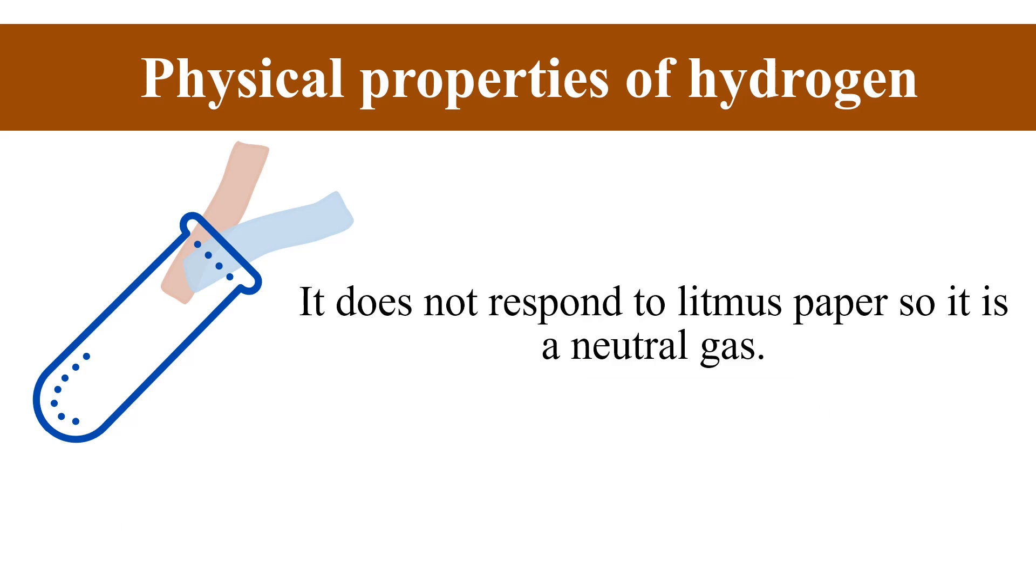Another physical property of hydrogen is hydrogen does not respond to any litmus paper, be it red or blue. So since it does not change the color of the litmus paper we can say that hydrogen is a neutral gas.